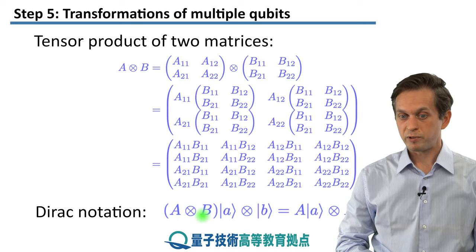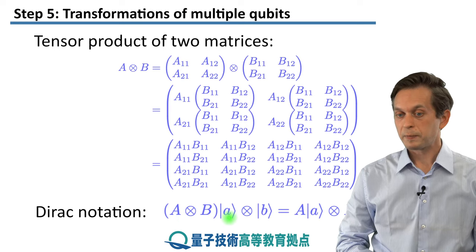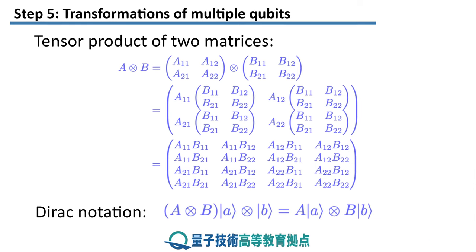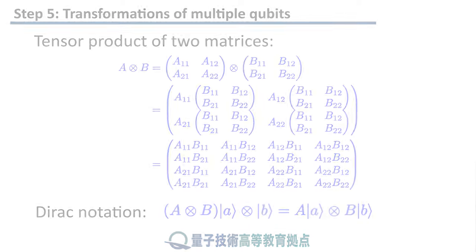Or you can just write it in Dirac notation, which is way simpler. We write that (A⊗B) acting on ket A⊗ket B can be written as matrix A applied to ket A, tensor product with matrix B acting on ket B. That's all.